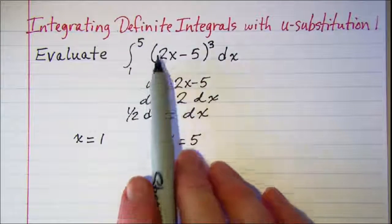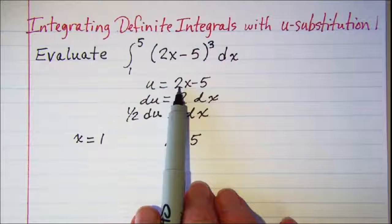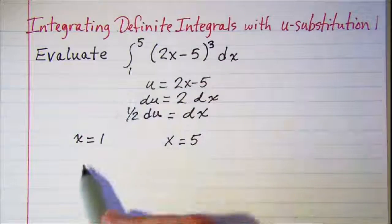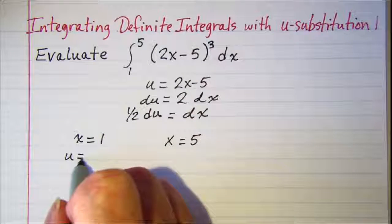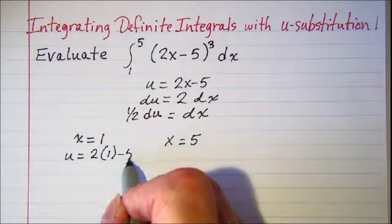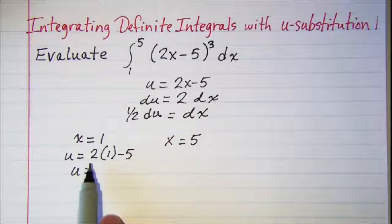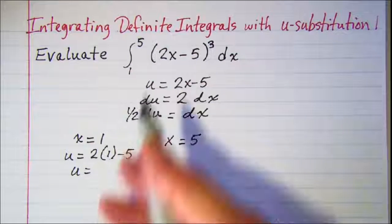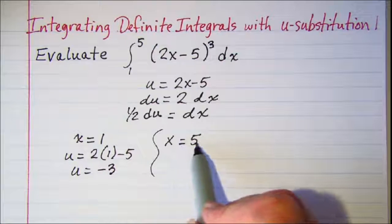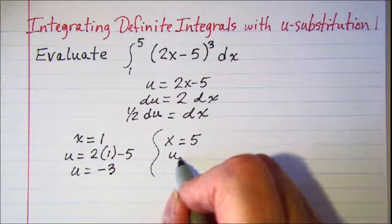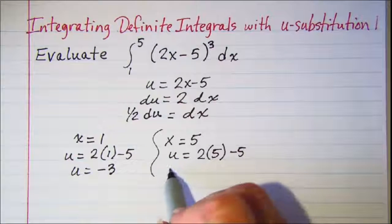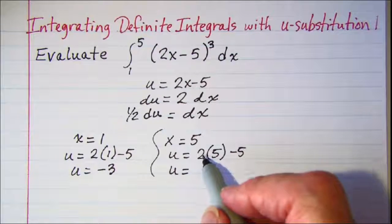Because we're substituting in u, we need to find values for our upper and lower limits. So u equals 2 times the x value minus 5. The lower limit gives us u equals 2 times 1 minus 5, which is negative 3. The upper limit gives us u equals 2 times 5 minus 5, which is 5.